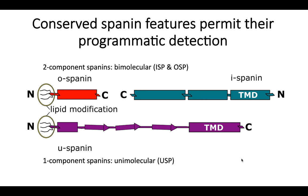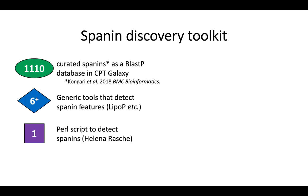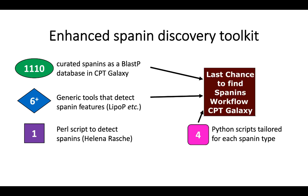These spanin proteins were looked at in a bioinformatic study by our group several years ago, taking advantage of generic tools that looked at those features of spanin proteins, as well as a Perl script written by Helena Rash. These were used together in a manual process to curate over a thousand spanins that were compiled into a BLAST database now in use in a phage annotation pipeline at the CPT Galaxy. We wanted to improve upon and modify this particular toolkit by combining the tools into a Galaxy workflow and by writing several new custom scripts in Python tailored to detect each of the spanin types based on their known features.